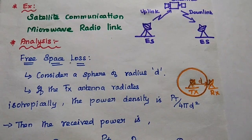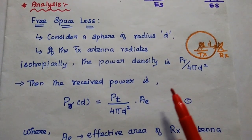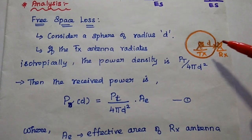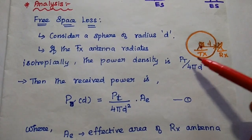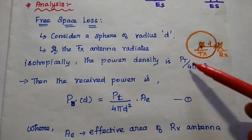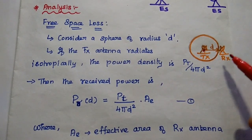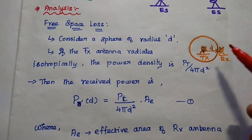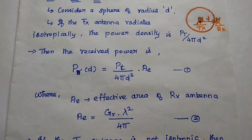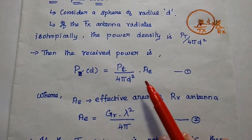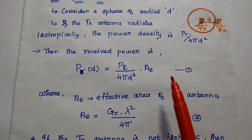Next, we are going to analyze the free space propagation loss and also predict the strength of the received signal. For that, we first analyze the free space loss. We consider a sphere of radius D. If the transmitting antenna is placed at the center of this sphere and radiates isotropically, then the power density at the surface at distance D is Pt divided by 4πD². The received power as a function of distance D is given as Pr(D) = (Pt / 4πD²) × AE. Consider this as the first equation.